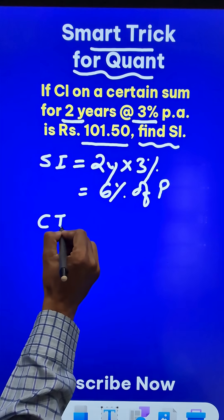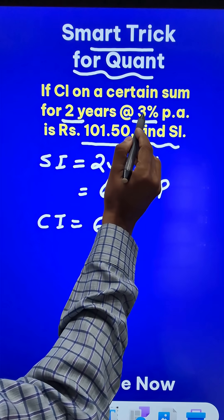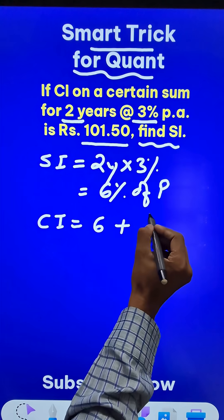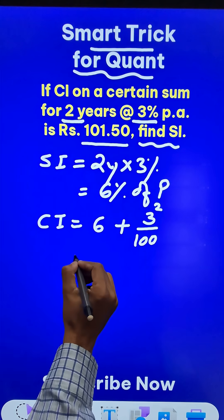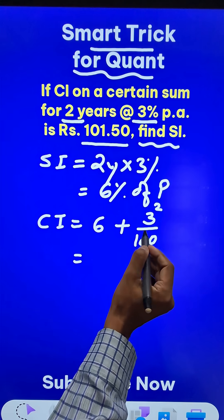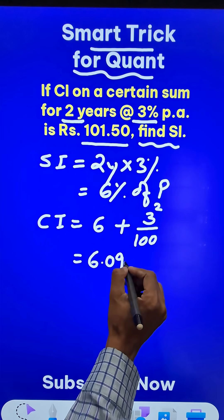Now to calculate the CI, we use the relation: this is 6%, so 6 plus the original ROI, that is rate of interest is 3%, so take square of 3 and divide it by 100. Now this will come out to be 6 plus 9 upon 100 is 0.09, so 6.09% of P.